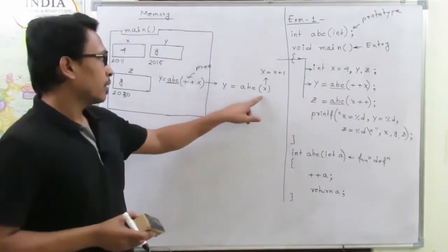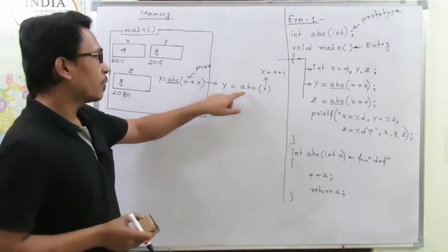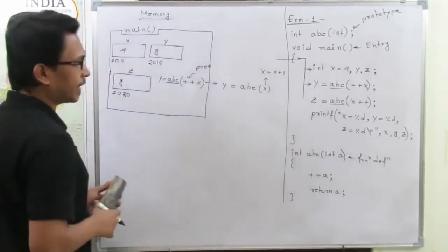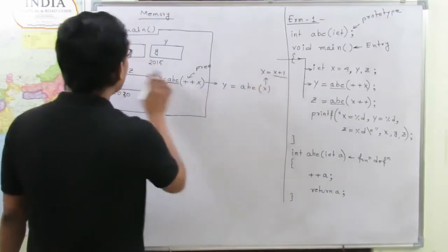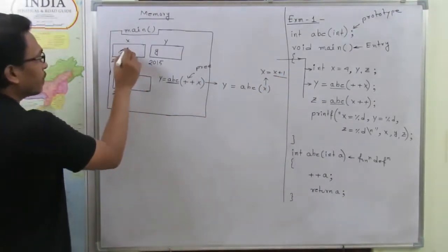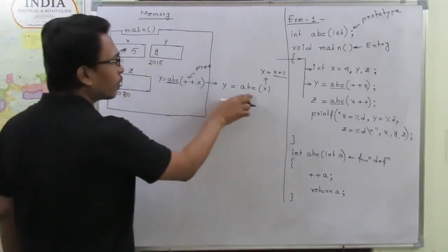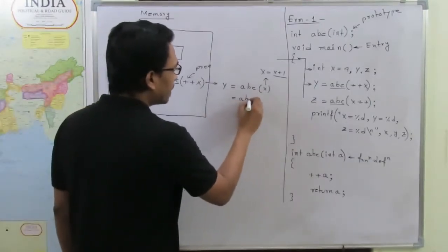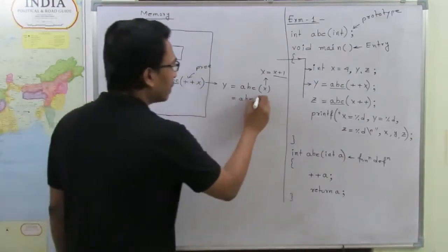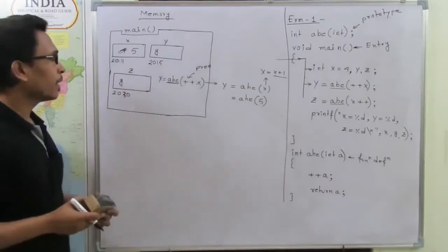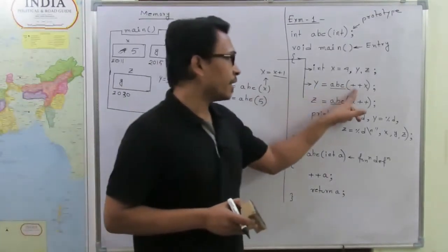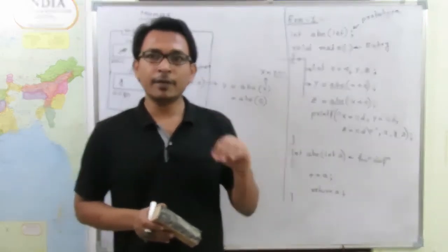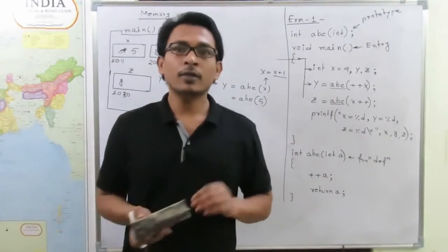From this instruction, we can clearly say: first we increment the value of x. The value of x is 4, so 4 + 1 means x is updated to 5. Then the function call will be performed. With pre-increment, the system first updates the value and then passes the updated value to the called function.